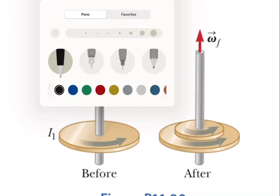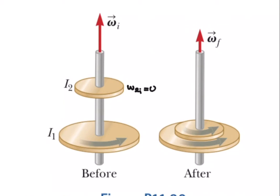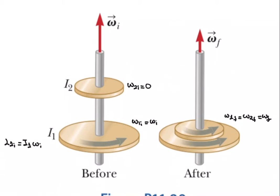So omega 2 initial is going to be 0, and omega 1 initial is omega initial. Finally, they are moving together, so omega 1 final and omega 2 final are equal to omega final. The angular momentum of the first disk initially is L1 initial = I1 times omega initial, and L2 initial is 0.